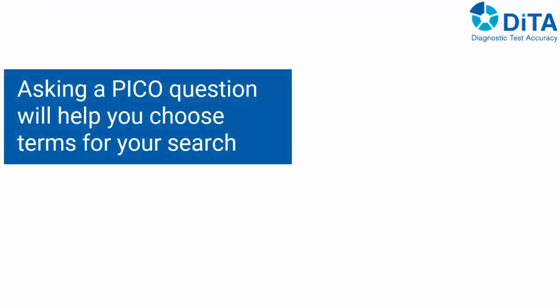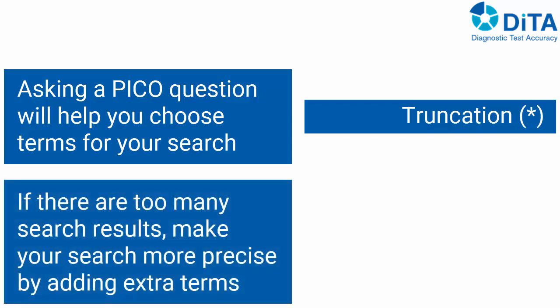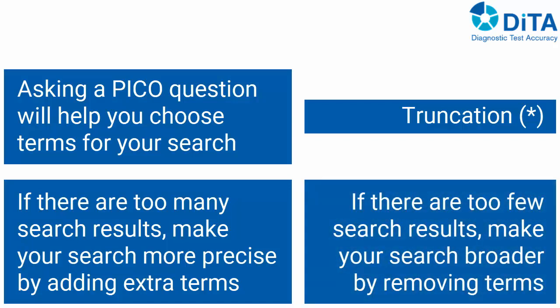We have just demonstrated how to use the DITA search interface. Asking a PICO question will help you to choose terms for your search, but remember you don't need to specify all of the PICO elements. A good starting point is to enter terms for the patient and investigation elements. Truncation will let you find all terms that start or end with the same string of text. Our initial search produced a large number of results; to overcome this we made our search more precise by adding extra terms. The opposite can also occur — if your search returns too few or no articles, you can make it broader by removing terms. With practice you will get better at conducting searches and quickly identify studies most relevant to your question.